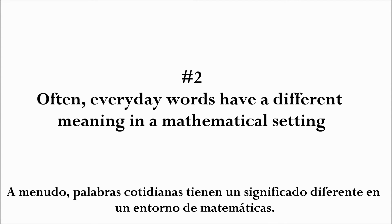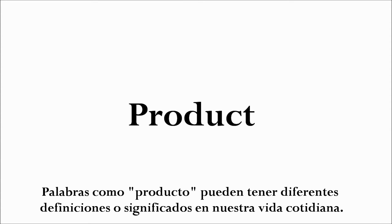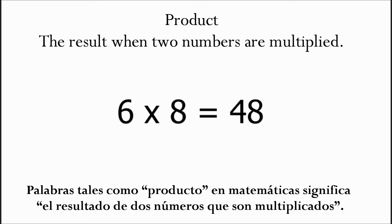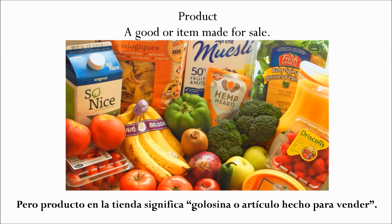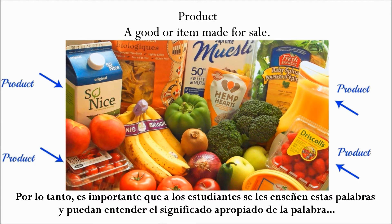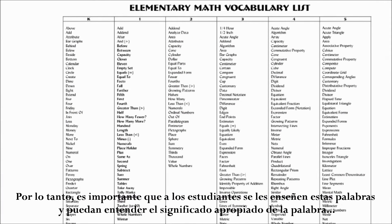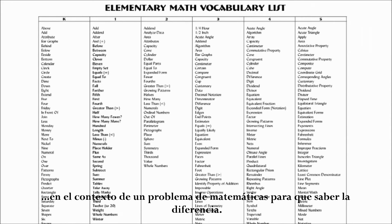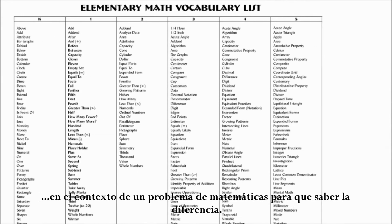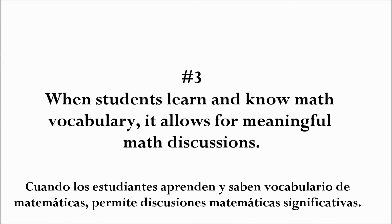That is why they need to learn and understand the vocabulary words so that they do know what the question is asking. Number two: often everyday words have a different meaning in a mathematical setting. Words such as "product" can have different definitions in our everyday life. For example, "product" in mathematics means the result when two numbers are multiplied, but a product in a store means a good or item made for sale. So it's important that students are taught these words and can understand the appropriate meaning of a word when in the context of a math problem.